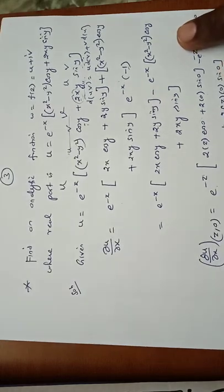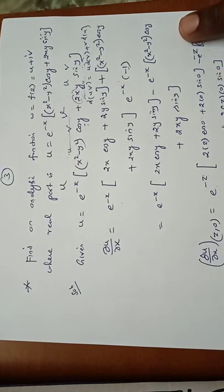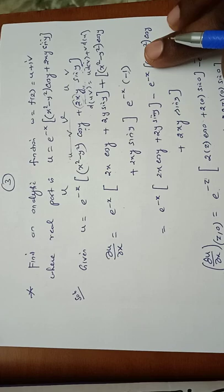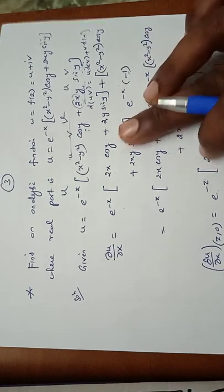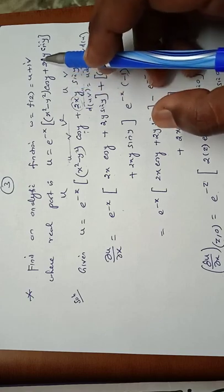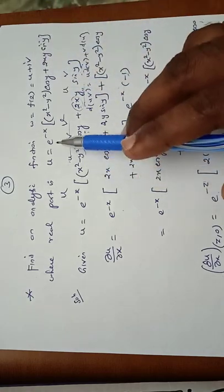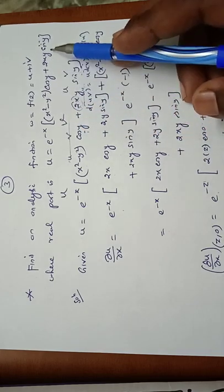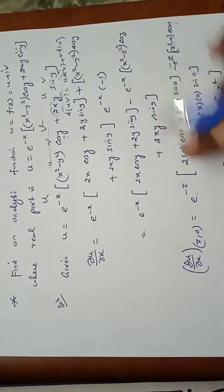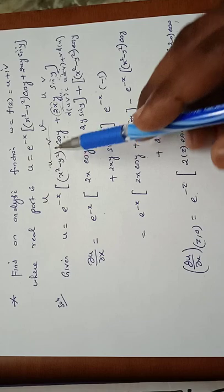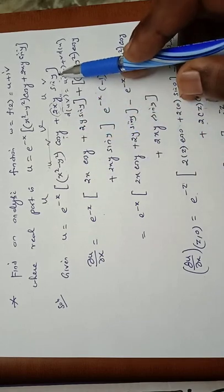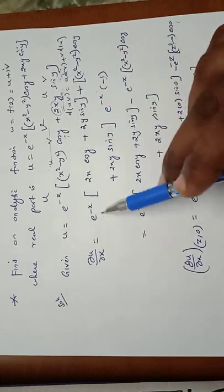Engineering Mathematics 2, MA8251, Unit 3 - Analytic Functions. Sum number 1: find an analytic function w = f(z) = u + iv, where the real part is u = e^(-x) times (x² - y²)cos(y) + 2xy·sin(y). The given function u = e^(-x) into (x² - y²)cos(y) + 2xy·sin(y) can be differentiated partially.